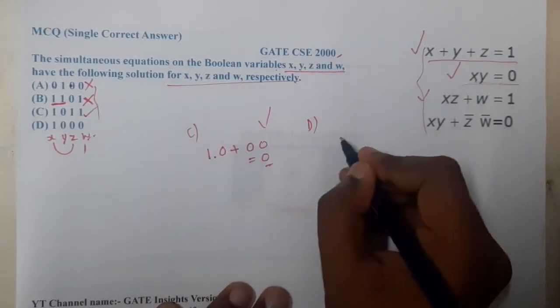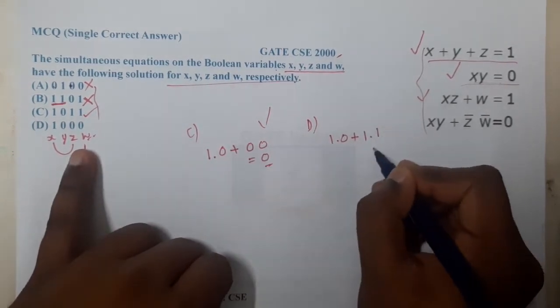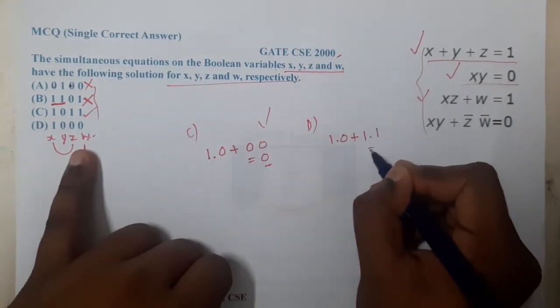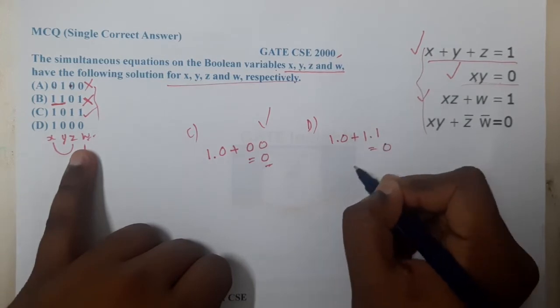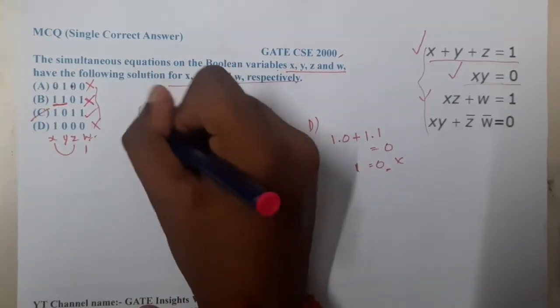Moving on to option D, that is one times zero plus one times one. One times one gives you zero on this side but one on the other side, so one equals zero. Hence option D is wrong.